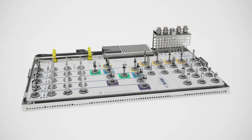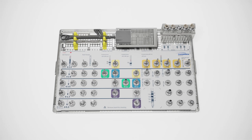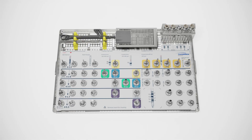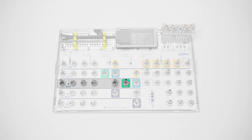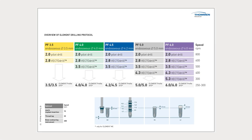During the following drilling instruction, the subcrestal placement of an Element RC implant with a platform size 4 and an endosseous length of 11 millimeters is demonstrated as an example. On the cassette, the platform color indications for both the Element and Contact implant lines guide the user to the necessary drilling diameter. For an Element Platform 4 implant, you will need to reach a drilling diameter of 3.5. You can also use the Drilling Protocol Overview Sheet for guidance.